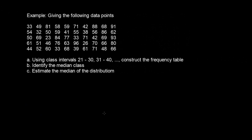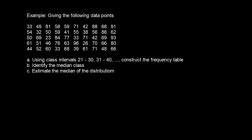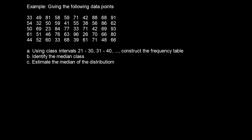Given the following data points, we are to use the class intervals of 21 to 30, 31 to 40, and so on, to construct a frequency distribution table. We are then to identify the median class and estimate the median of the distribution. The first thing we do is use the provided class intervals to group the data, so I'm going to draw a table here.